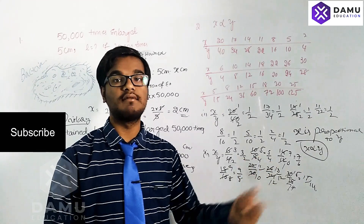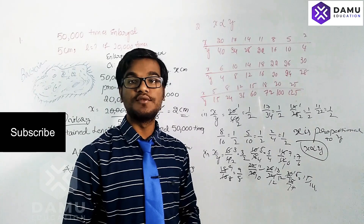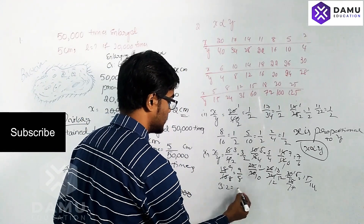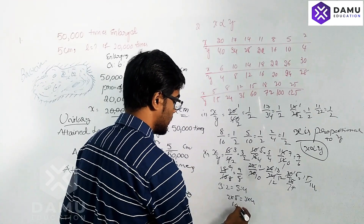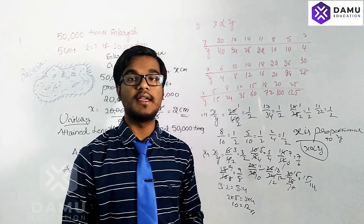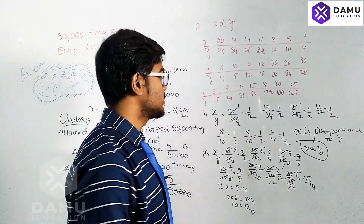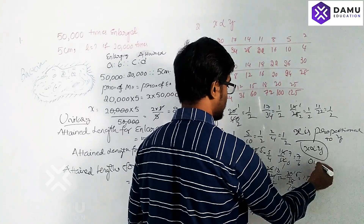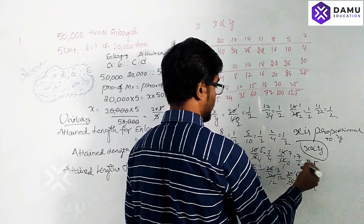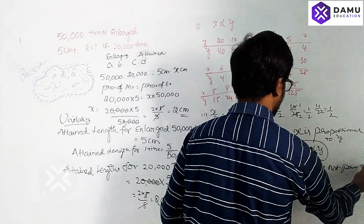We check whether these ratios are in proportion. Taking 3 is to 2 as 5 is to 4: the product of means is 2 into 5 = 10, and the product of extremes is 3 into 4 = 12. They are not equal, so all ratios are not in proportion. Therefore x is not directly proportional to y; x is inversely proportional to y, written as x ∝ 1/y.